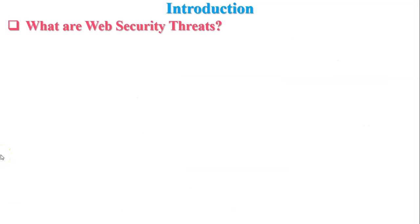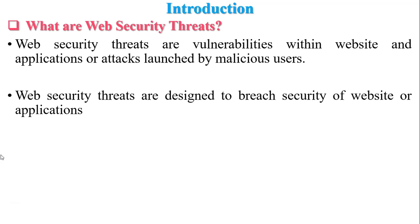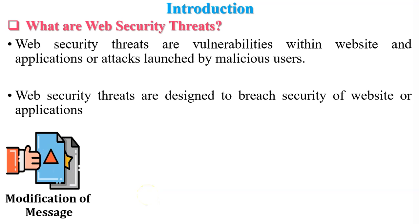Web security threats are vulnerabilities within websites and applications, or attacks launched by malicious users designed to breach the security of a website or application. The first example is modification of message. Messages should not be altered during transmission — if altered, the integrity is broken. If a message has been changed during transmission, it is called a data breach, meaning confidential and sensitive information gets exposed.